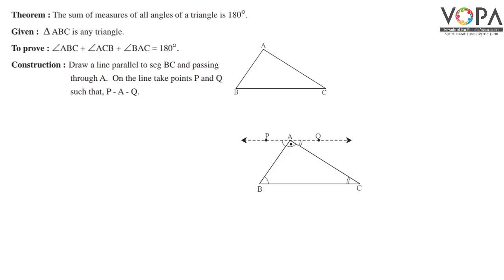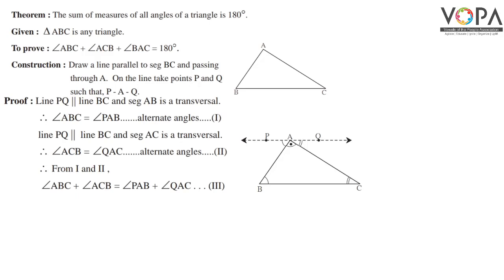Proof: line PQ is parallel to line BC, and segment AB is the transversal. Therefore angle ABC is equal to angle PAB — these are alternate angles, numbered as 1. Similarly, line PQ is parallel to line BC and segment AC is the transversal, so angle ACB is equal to angle QAC — they are also alternate angles, numbered as 2.